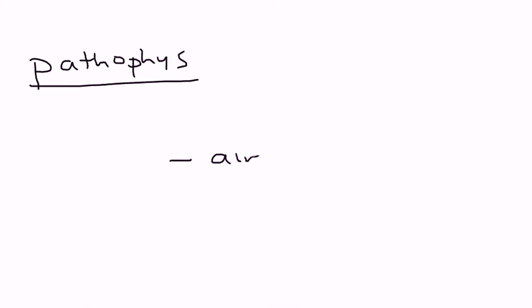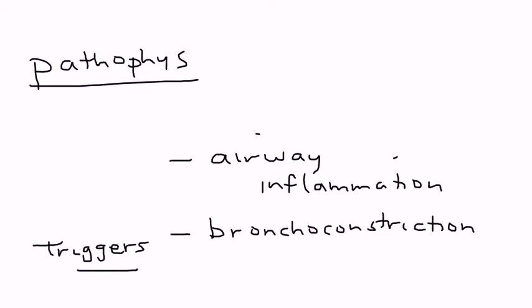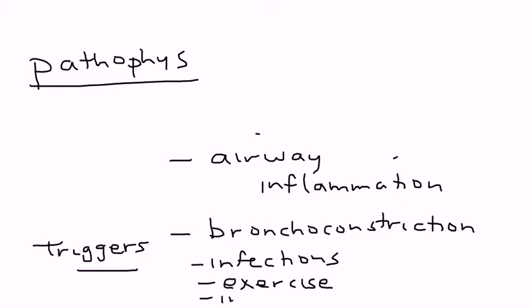The fundamental pathophysiology of asthma involves two things: first, you have inflammation in your airway, and then bronchoconstriction. These two things can happen again and again. Some of the triggers include infections, exercise in certain populations, and sometimes inhaled irritants.